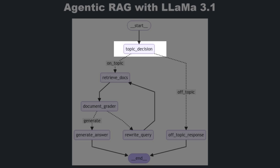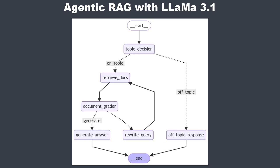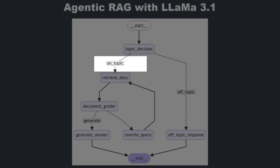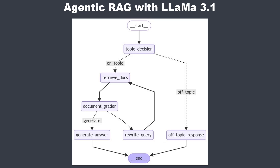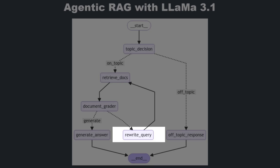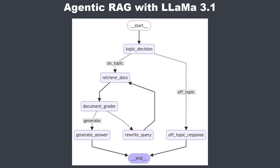We start with an input to the agent, which first makes a topic decision — we decide if the question of a user is on topic or off topic. If it's off topic we just want to provide a standardized off topic response; otherwise we want to retrieve documents based on the question. After the retrieval step we've got a document grader node, which will evaluate whether a document is suited to answer a question or not, using a boolean yes or no value. We will drop all documents that have a false value, and if we only get false values then we will rewrite the query and try to retrieve the documents again.